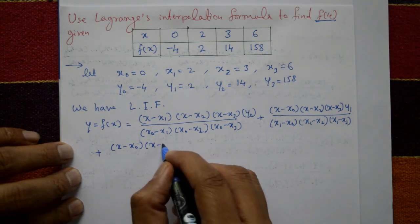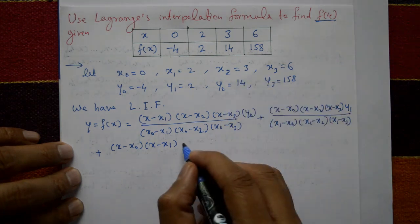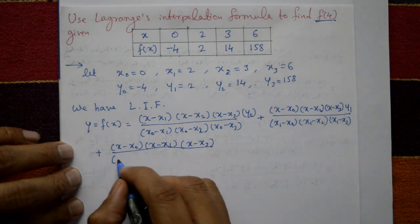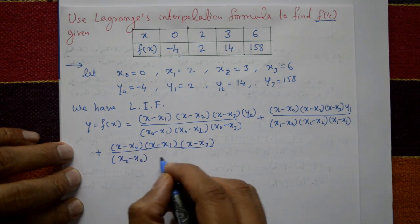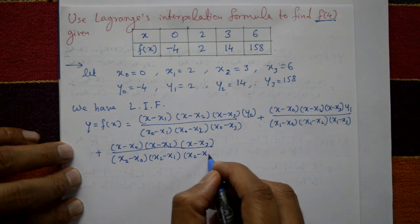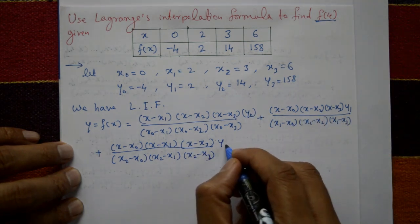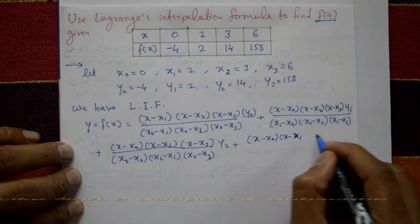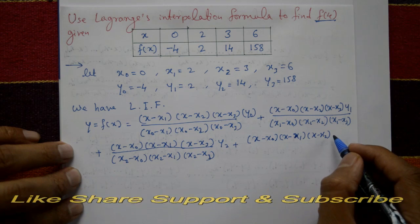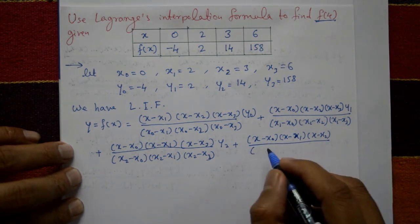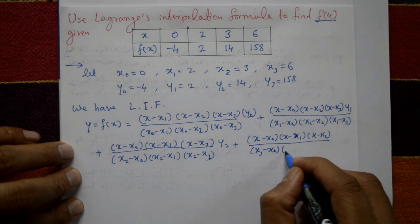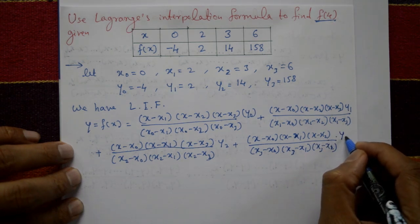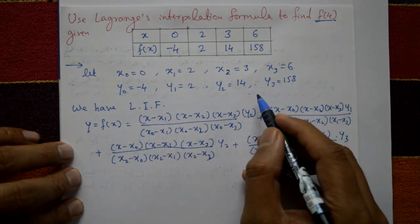Plus the third term: [(x − x₀)(x − x₁)(x − x₃)] divided by [(x₂ − x₀)(x₂ − x₁)(x₂ − x₃)] into y₂. Plus the fourth term: [(x − x₀)(x − x₁)(x − x₂)] divided by [(x₃ − x₀)(x₃ − x₁)(x₃ − x₂)] into y₃.